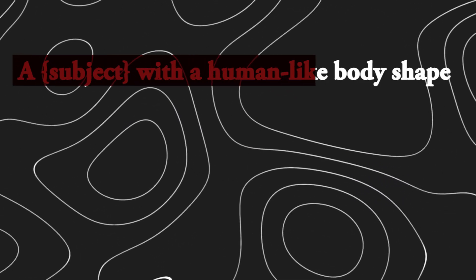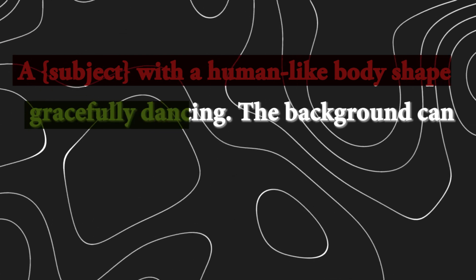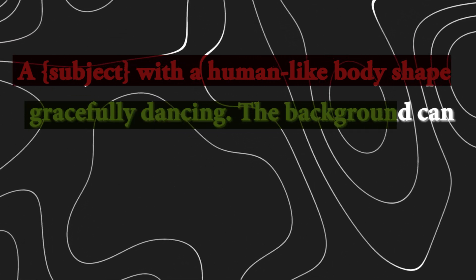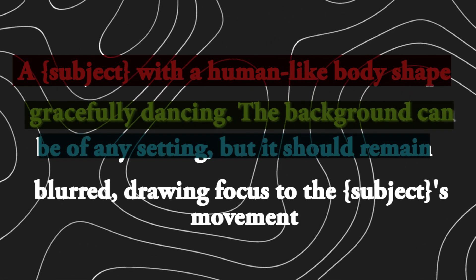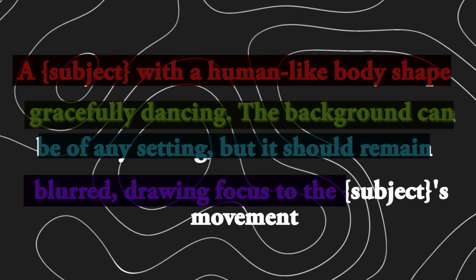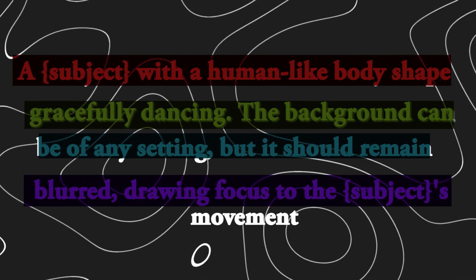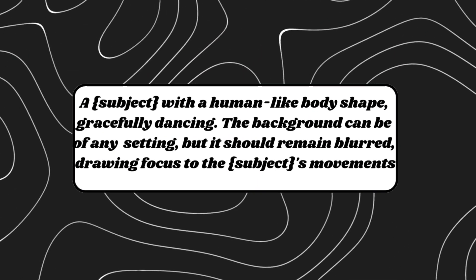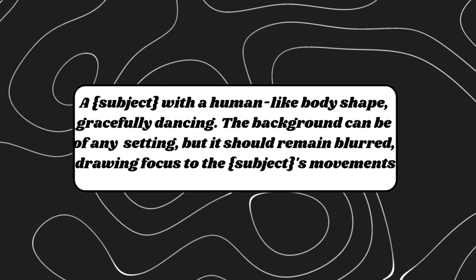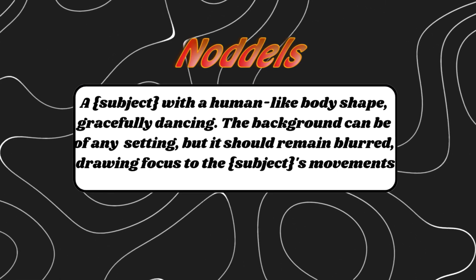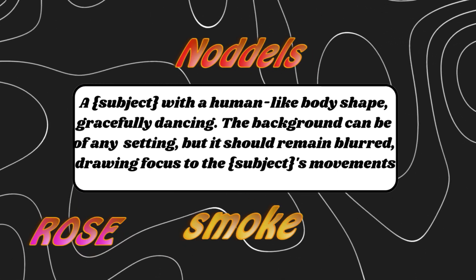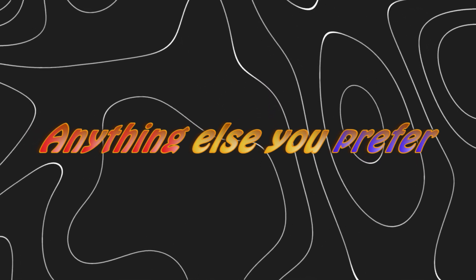A subject with a human-like body shape, gracefully dancing. The background can be of any setting, but it should remain blurred, drawing focus to the subject's movements. In place of the subject, you can insert any object you want to feature in your video, such as noodles, smoke, a rose, or anything else you prefer. Feel free to adjust this prompt to suit your needs.